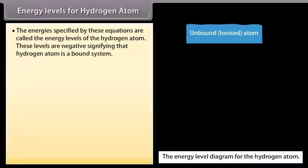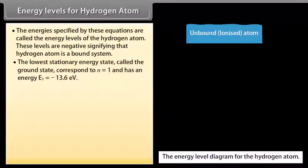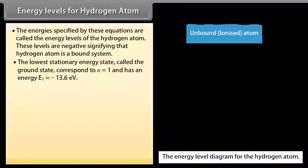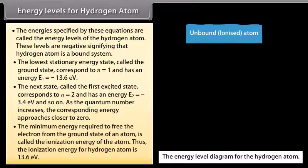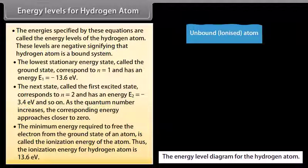The energies specified by these equations are called the energy levels of the hydrogen atom. These levels are negative, signifying that the hydrogen atom is a bound system. The lowest stationary energy state, called the ground state, corresponds to n = 1 and has energy E₁ = −13.6 eV. The first excited state corresponds to n = 2 with energy E₂ = −3.4 eV. As the quantum number increases, the corresponding energy approaches closer to zero. The minimum energy required to free the electron from the ground state is called the ionization energy; for hydrogen it is 13.6 eV.